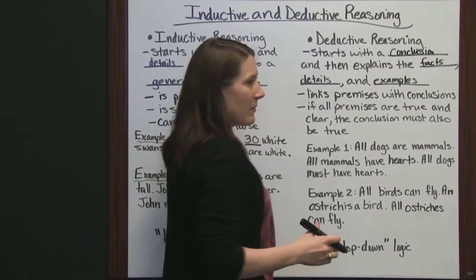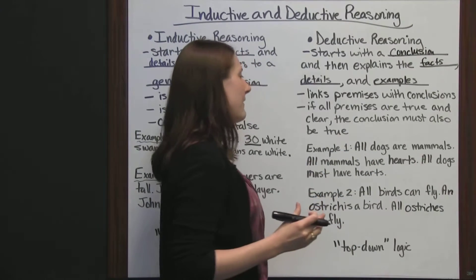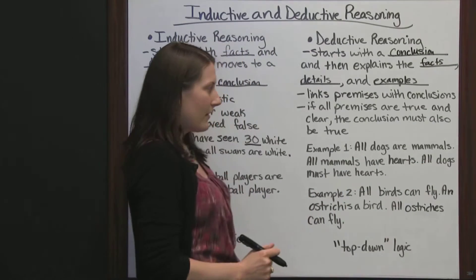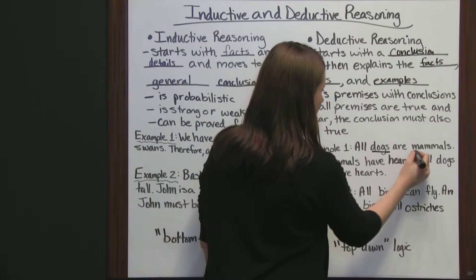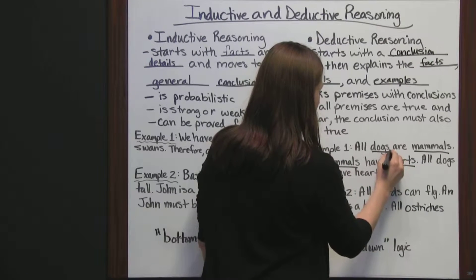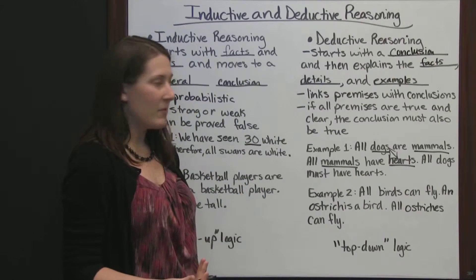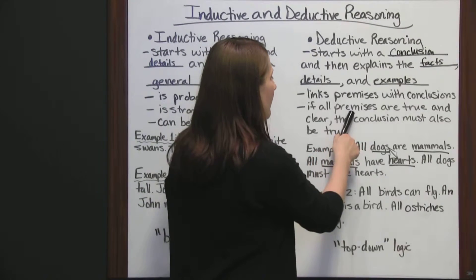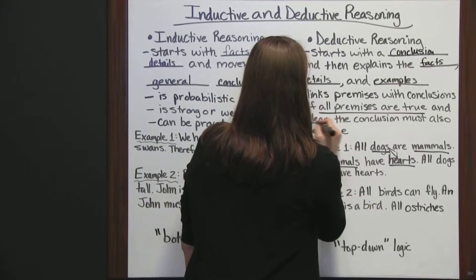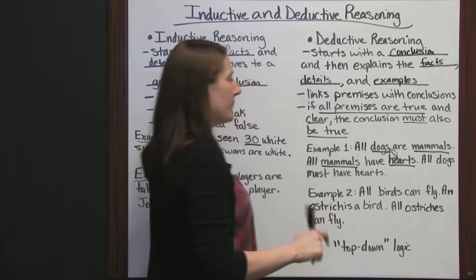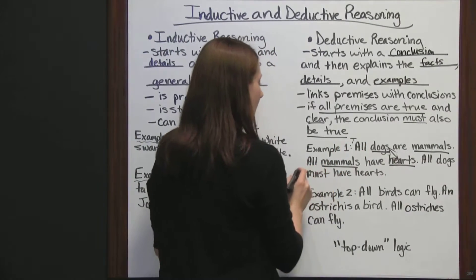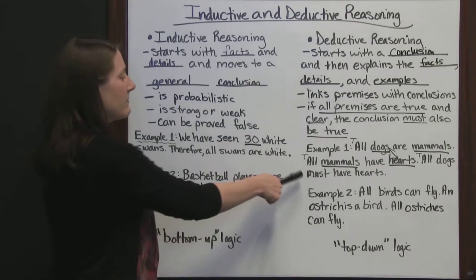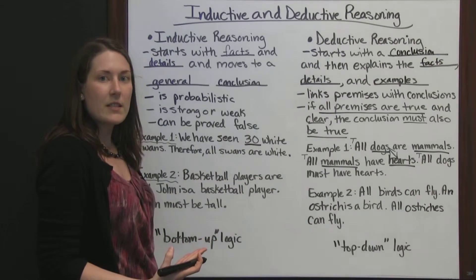You start with this: all dogs are mammals. All mammals have hearts. Based on the fact that all dogs are mammals and all mammals have hearts, all dogs must have hearts. Dogs are mammals and mammals have hearts, which means dogs must have hearts since they are mammals and all mammals have hearts. This is a true conclusion — that's because all the premises are true. If all premises are true and clear, then the conclusion must also be true. All dogs are mammals — true. All mammals have hearts — true. Therefore, all dogs must have hearts — true. This is a true conclusion based on deductive reasoning.